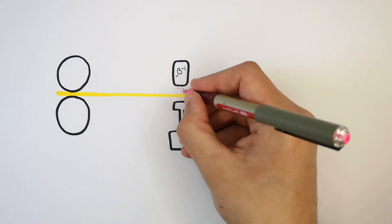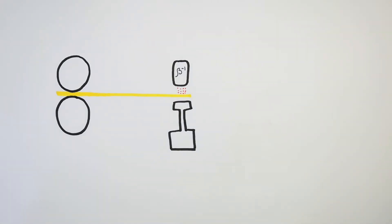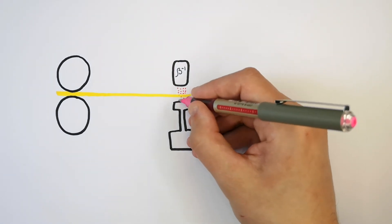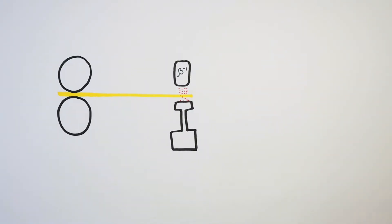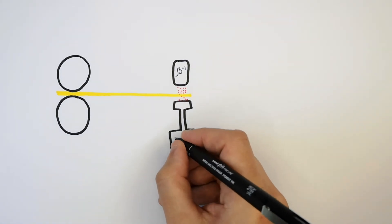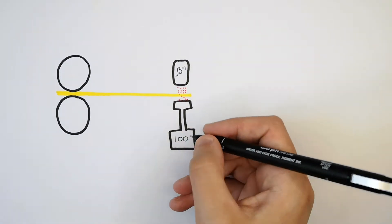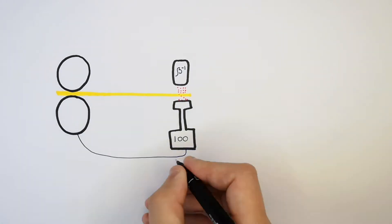The beta particles are going to be emitted from the beta source, pass through the paper, and then be detected by the beta detector below it. The factory wants to see a count rate of 100, which means the paper is being rolled to the correct thickness.